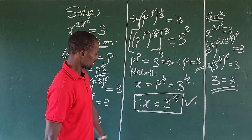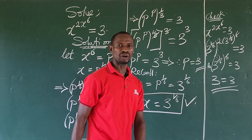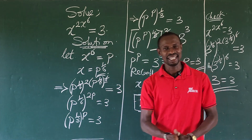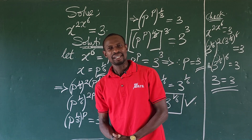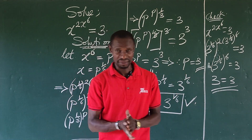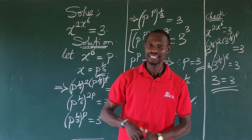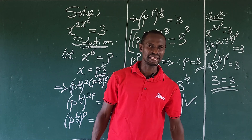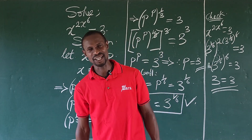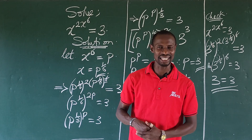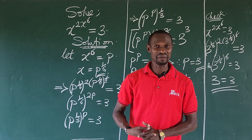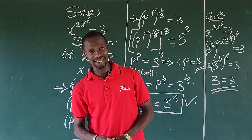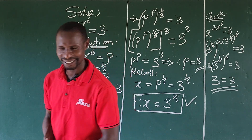This shows that x equals three to the power of one over six satisfies the original equation. This is a Harvard MIT Math Tournament problem. If you learned something from this video, give it a thumbs up. If you have a better way of solving it in under 30 seconds, drop it in the comments. Thanks for watching Online Maths TV — keep winning, bye for now!